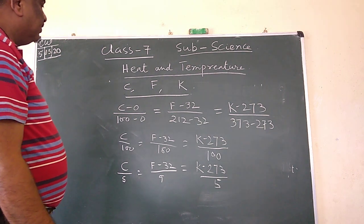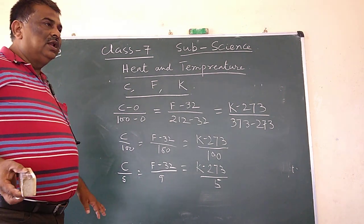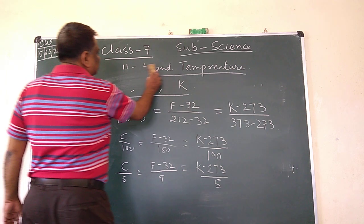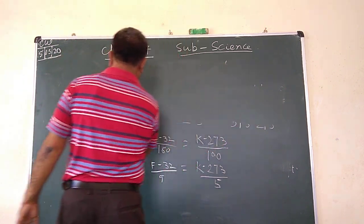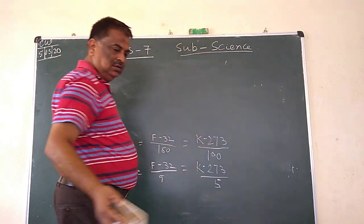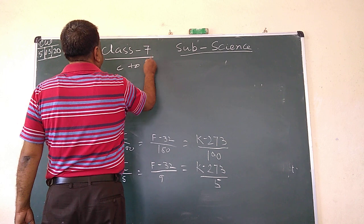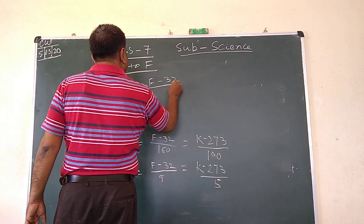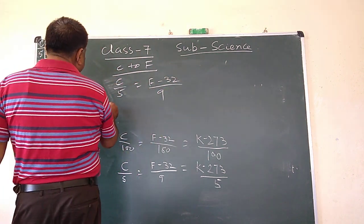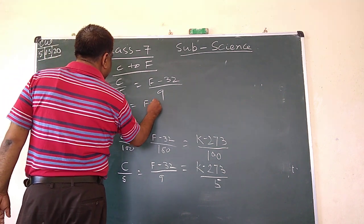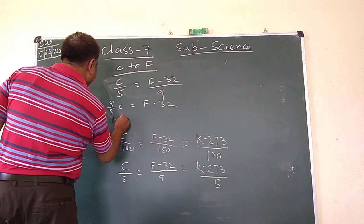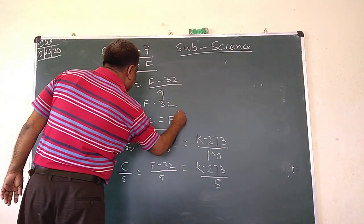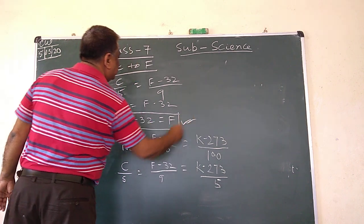Now, how do we convert Celsius to Fahrenheit? From C by 5 equals F minus 32 by 9, we get 9 by 5 times C equals F minus 32, so 1.8C plus 32 equals F. Therefore, F equals 1.8C plus 32.